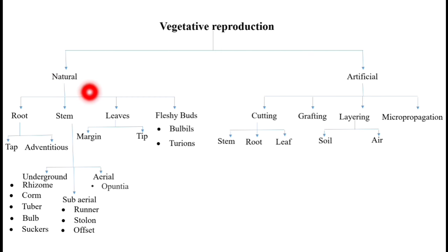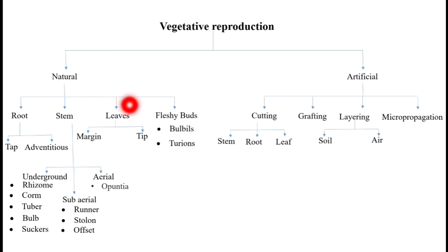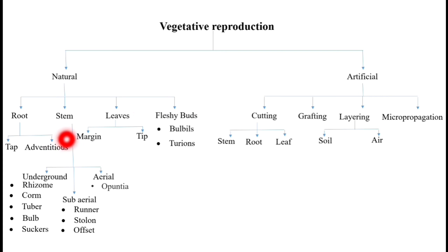Natural vegetative reproduction can occur through roots, stems, leaves, or fleshy buds. In the roots, we will see which way bud formation occurs and how they form new individuals.